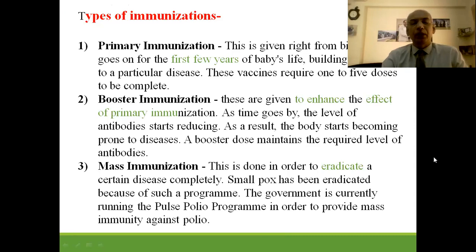Types of immunization: First is primary immunization, given at birth and continuing through the first few years of life, building the immune system against particular diseases — doses may be 1 to 5. Second is booster immunization, given to enhance the efficiency of primary immunization when antibody levels start reducing, maintaining protection. Third is mass immunization, done to eradicate certain diseases completely — smallpox has been eradicated, and polio eradication is next.